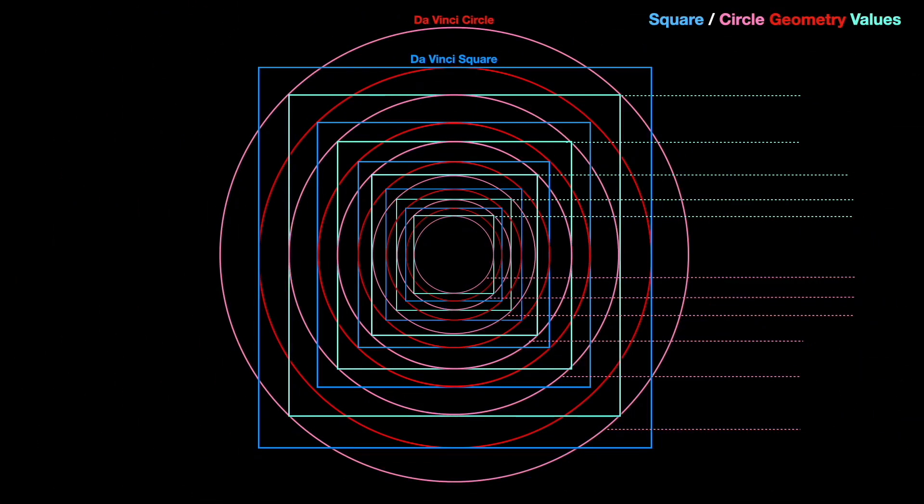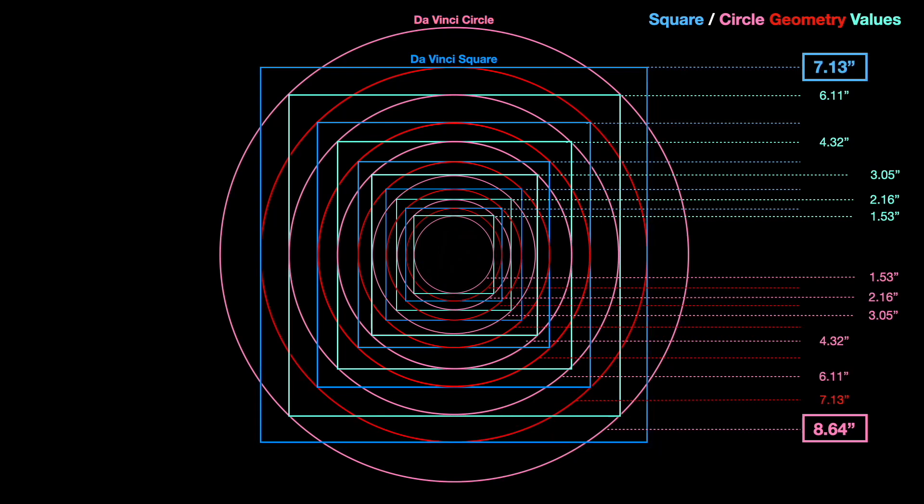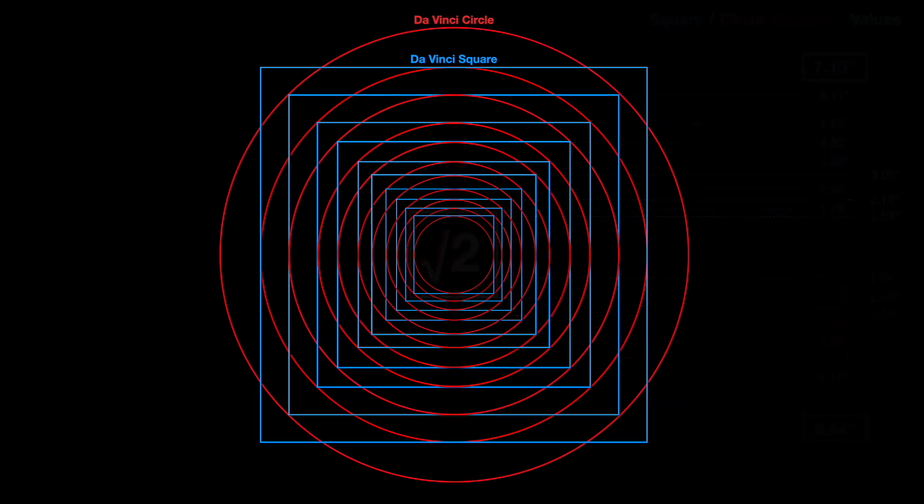The mathematics is quite simple. Starting with the outer 8.64 inch circle, divide by root 2 and that will give us the inscribed green square and the next pink circle within it at 6.11. Divide by root 2 again and that gives us 4.32 for the next inscribed circles and squares and so on, giving us all the values we need to correlate to the planets. Starting at da Vinci square at 7.13, we do the same thing, divide by root 2 over and over again, giving us all these values that we can then compare.